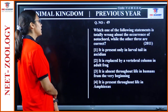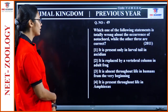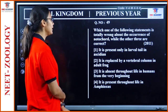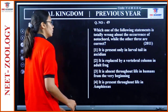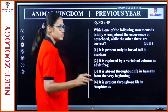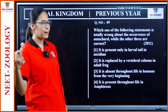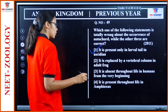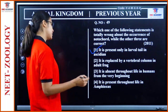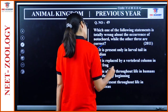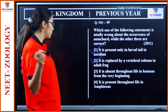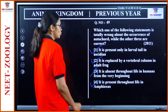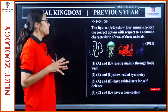Question 49: 'Which statement about notochord occurrence is totally wrong?' Present only in larval tail of Ascidia — correct, Ascidia (Urochordata) has notochord only in larval tail. Replaced by vertebral column in adult frog — frog as vertebrate, yes, replaced. Absent throughout life in humans — wrong, it is present in the embryonic stage in humans. Present throughout life in Amphioxus (Cephalochordata) — yes, correct. So option 3 — absent throughout life in humans — is totally wrong.